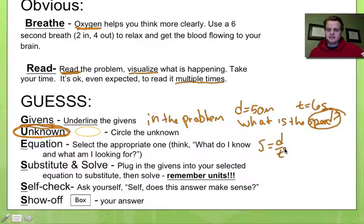So the idea is you want to find the right relationship that will give you what you're looking for. You're looking for speed, so you take 50 meters divided by six seconds. You take the distance divided by the time. That's the equation you're going to use. All right, so we breathed, we read the problem, we underlined the givens in the problem, we circled the unknown, we even picked out the equation that we're going to use.